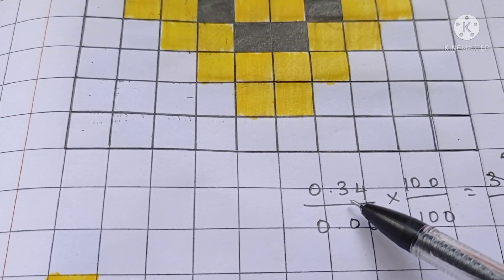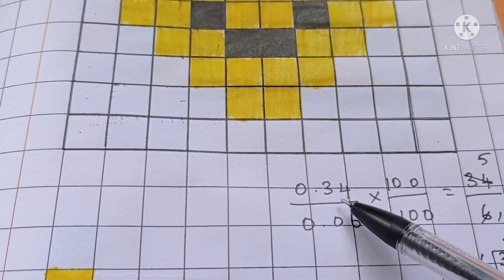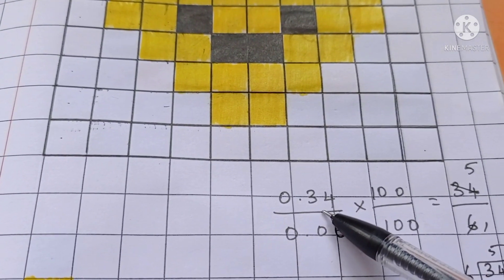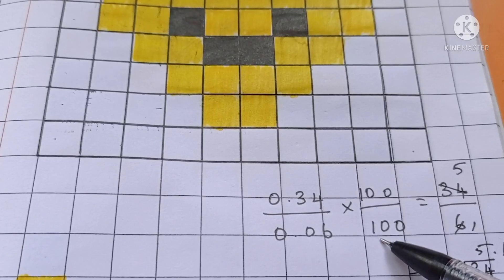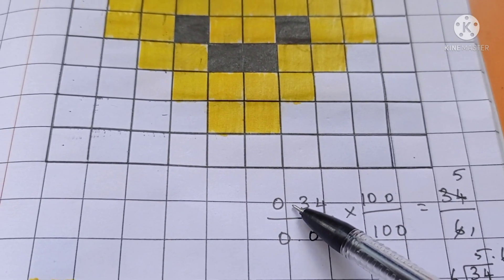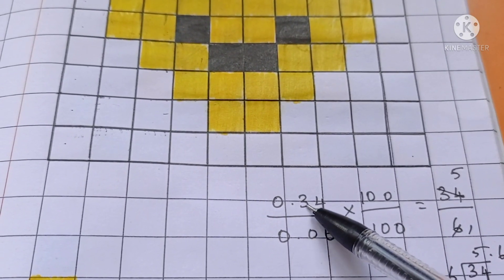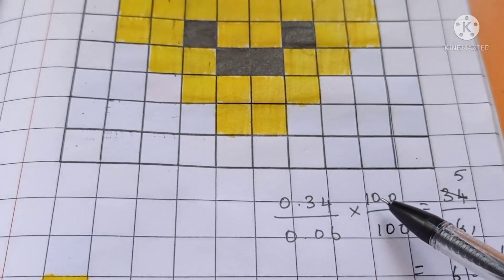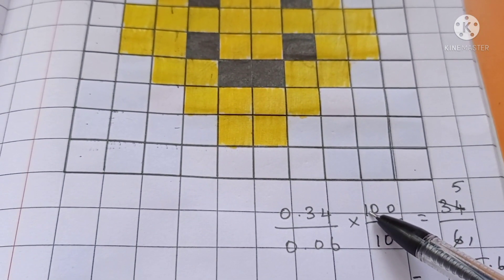First let's remove the decimal point. To remove the decimal point we have to multiply by 100. After decimal point there are two numbers. So we have to multiply by 100.